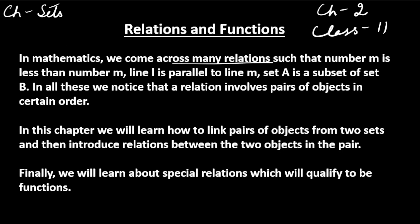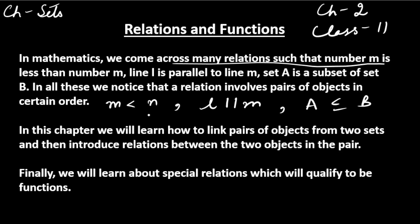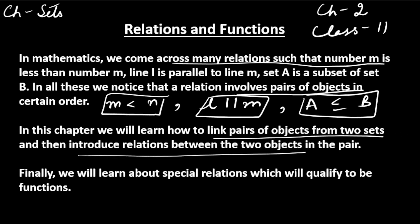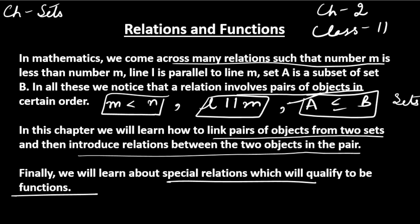In mathematics we come across many relations like m is less than n, line l is parallel to line m, set A is a subset of set B. In all of these we can notice that a relation involves a pair of objects. So in this chapter we will learn how to link pairs of objects from two sets and then introduce a relation between the two objects in the pair. After studying their relationships, we will learn about some special relations which will qualify to be functions.